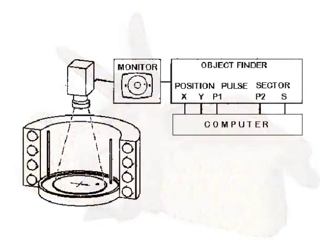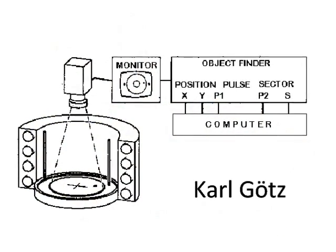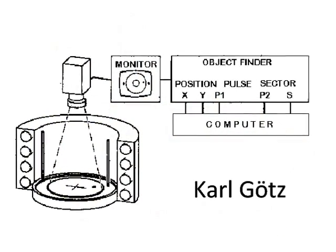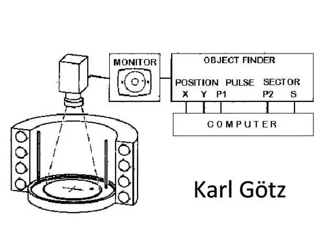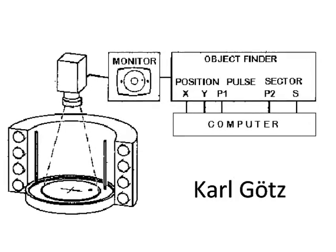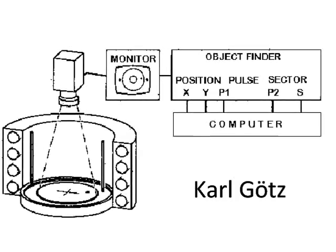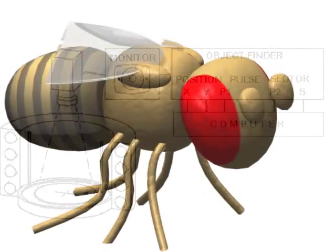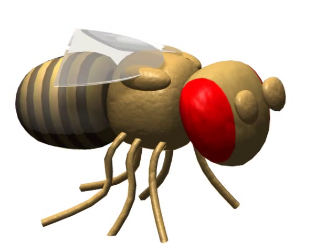The experiment was invented by Karl Goetz in 1980, using a hardware object finder to detect the position of a fly walking on a platform. To prevent the flies from escaping, their wings are shortened.